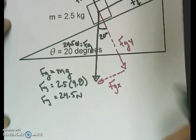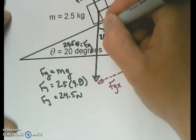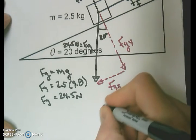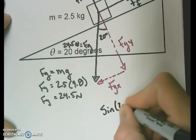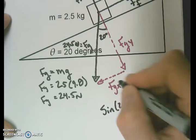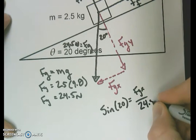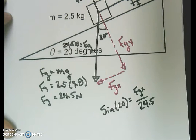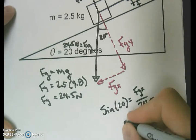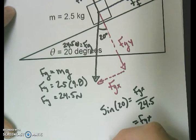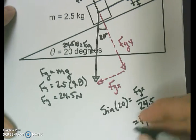Force of gravity in the x direction, that's opposite. So sine of 20 is going to be equal to my opposite FGX over my hypotenuse 24.5. Sine of 20 times 24.5 will give me an FGX of 8.379. We'll round that to 8.38.